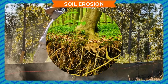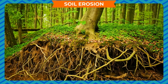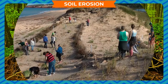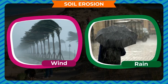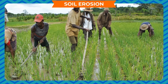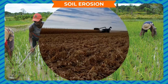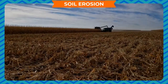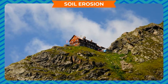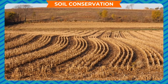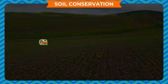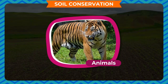Soil particles are held very tightly by the roots of plants. Human activities like deforestation and overgrazing by cattle expose the topsoil, which gets eroded more easily by wind or rain. Farmers plough the fields to grow crops, but this also loosens the topsoil, which can then be carried away by water and wind. This happens quite frequently in hilly areas.